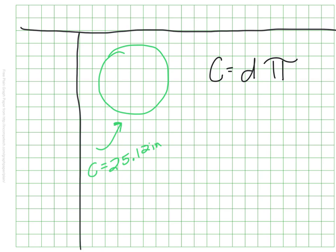So we know that circumference is the diameter times pi, but we don't know our diameter. We do know that our circumference is 25 and 12 hundredths of an inch. We don't know our diameter, but we know if we multiply it by 3.14 for pi, we get that answer.